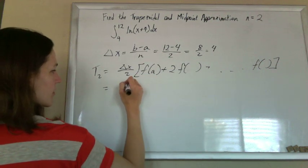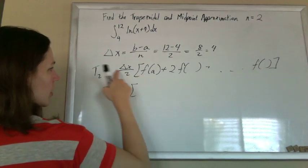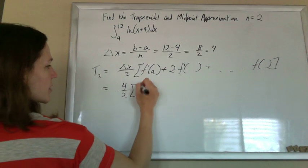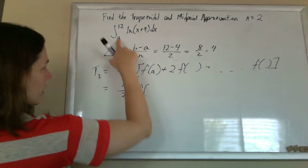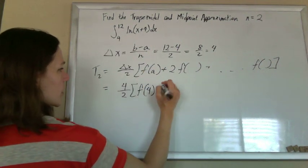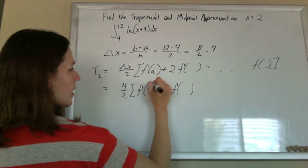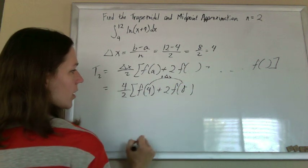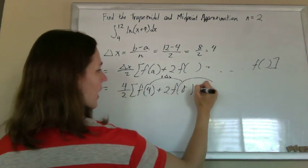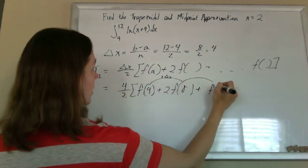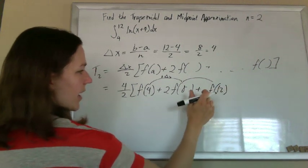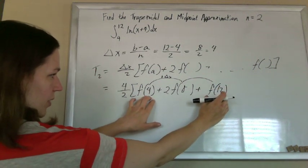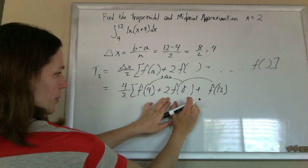So delta x is 4 over the 2. Start with f of a, a is 4. So f of 4 plus 2. Keep adding delta x, so delta x is 4, so f of 8, and add until you get to b, which we were there. And that last one, the first and the last one, don't have any 2s. All the middles for trapezoidal have 2s.